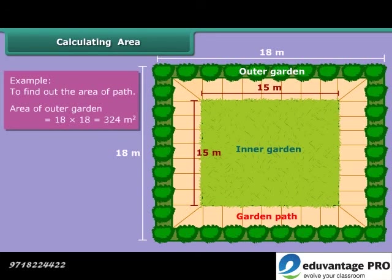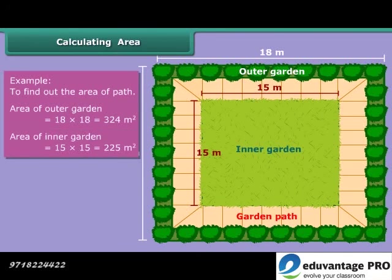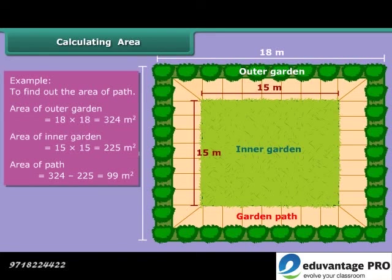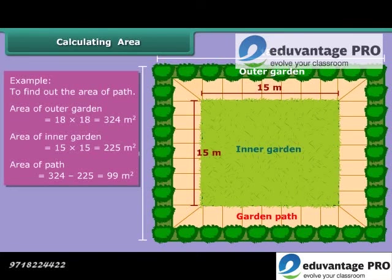Area of the outer garden is 324 square meters and area of the inner garden is 225 square meters. So, the area of the path will be 324 square meters minus 225 square meters, which is equal to 99 square meters.